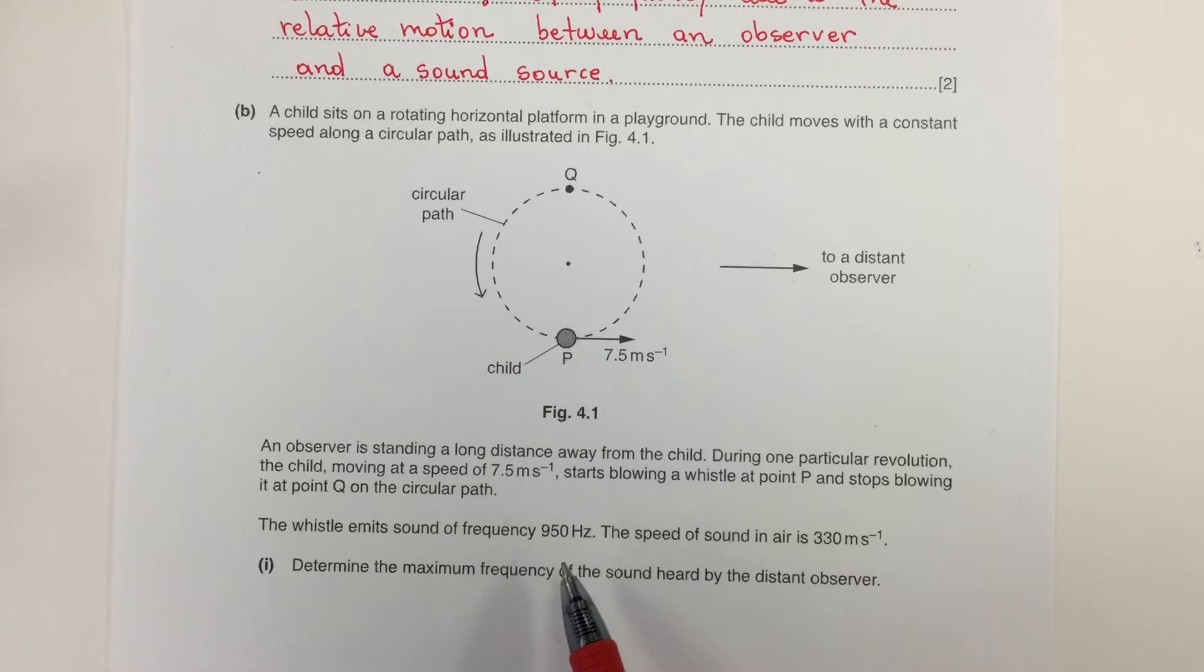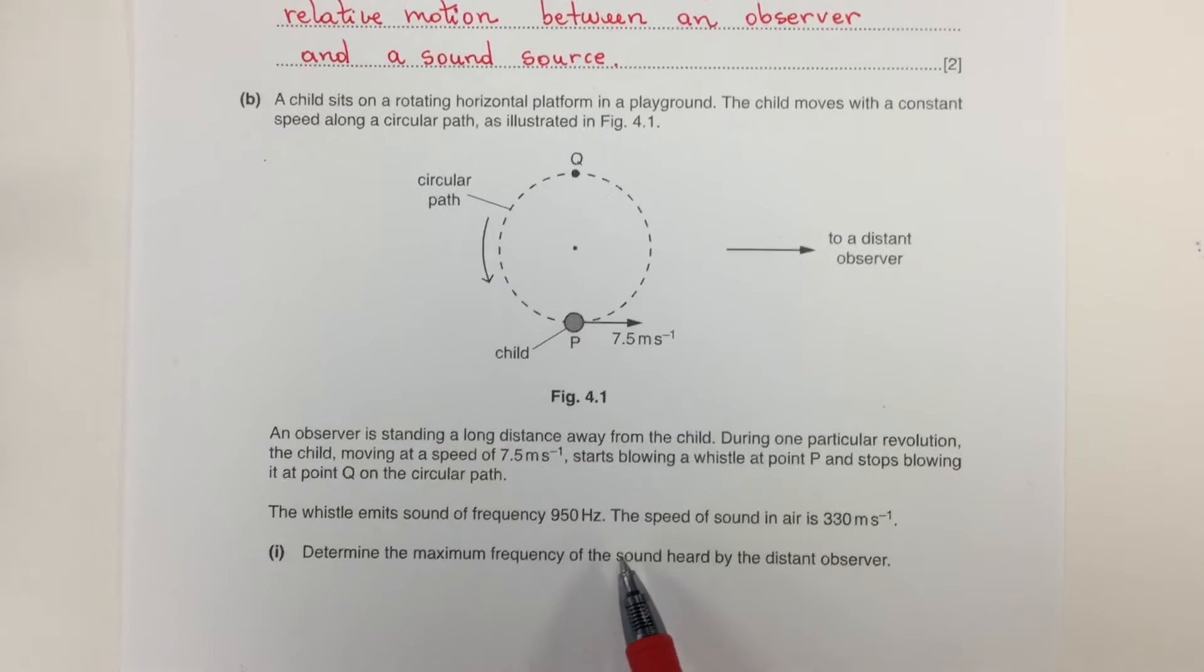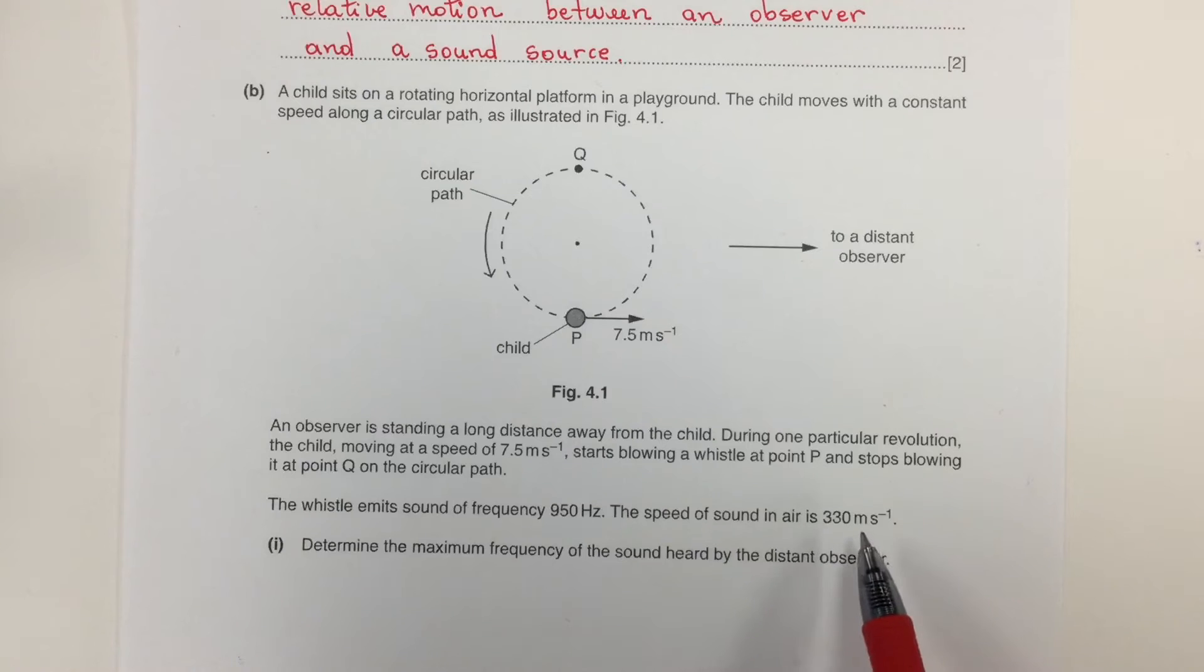The whistle emits sound of frequency 950 Hz. The speed of the sound in the air is 330 meters per second.